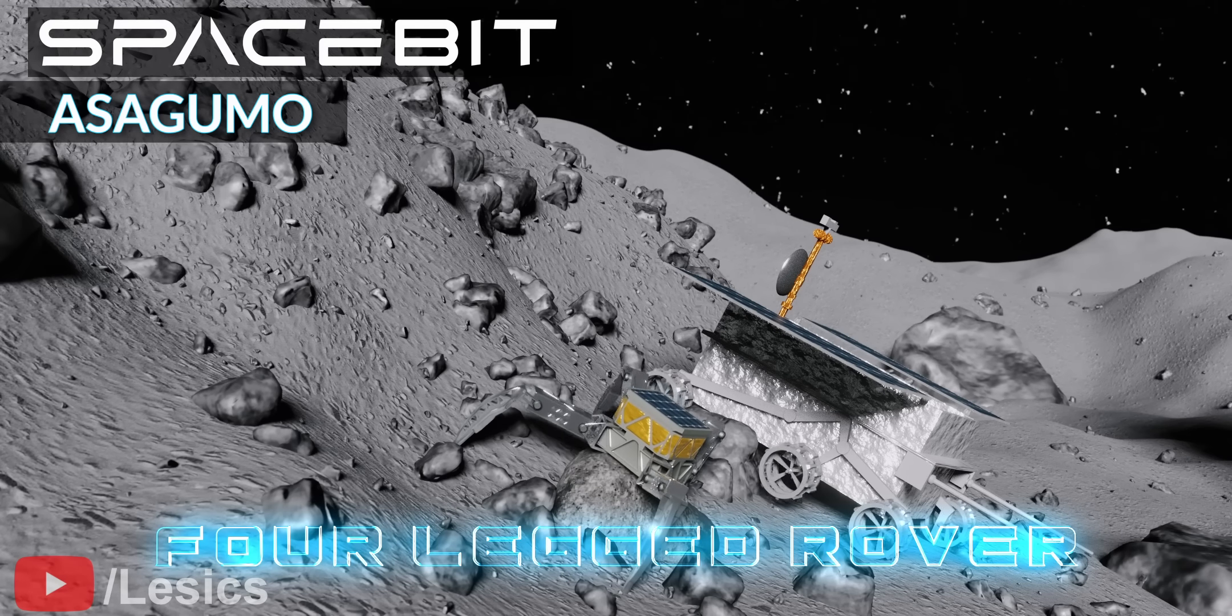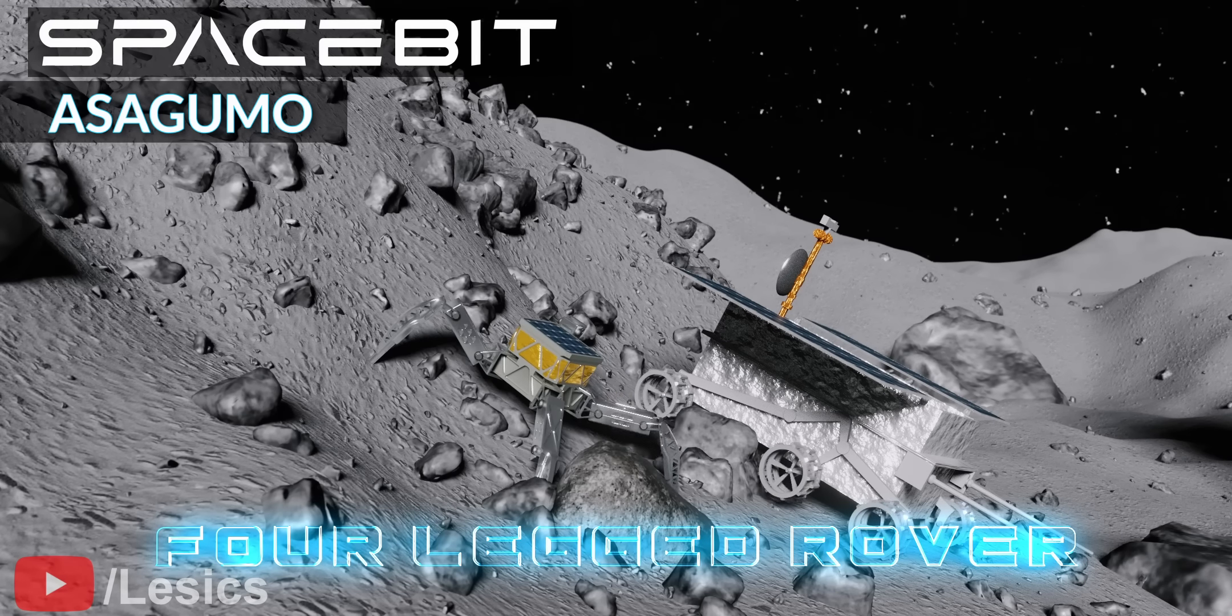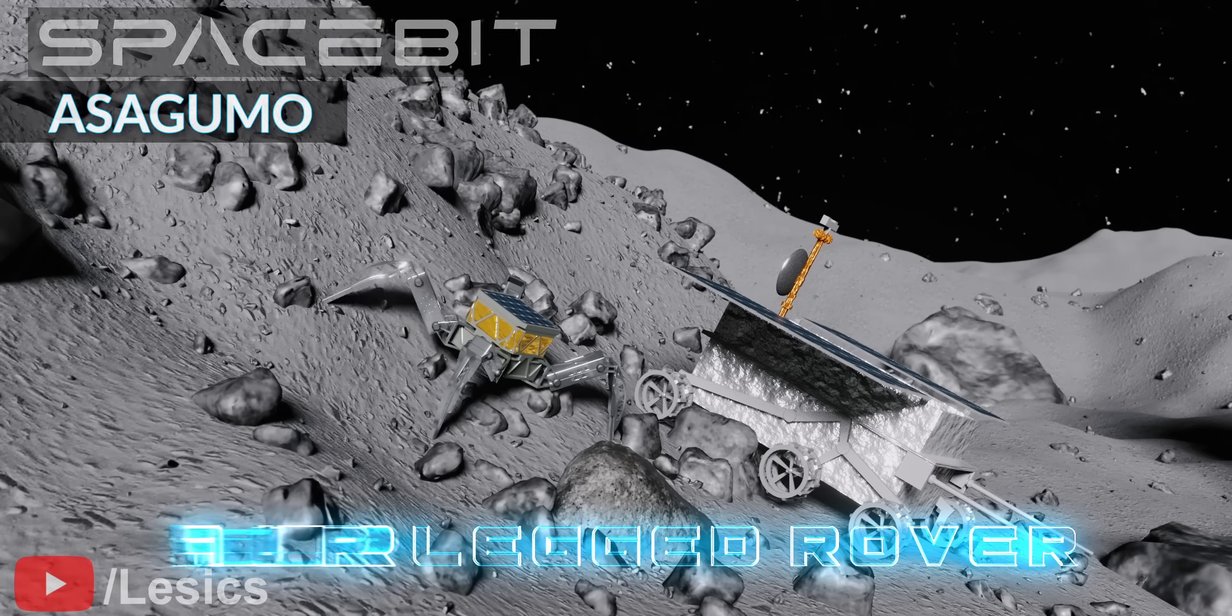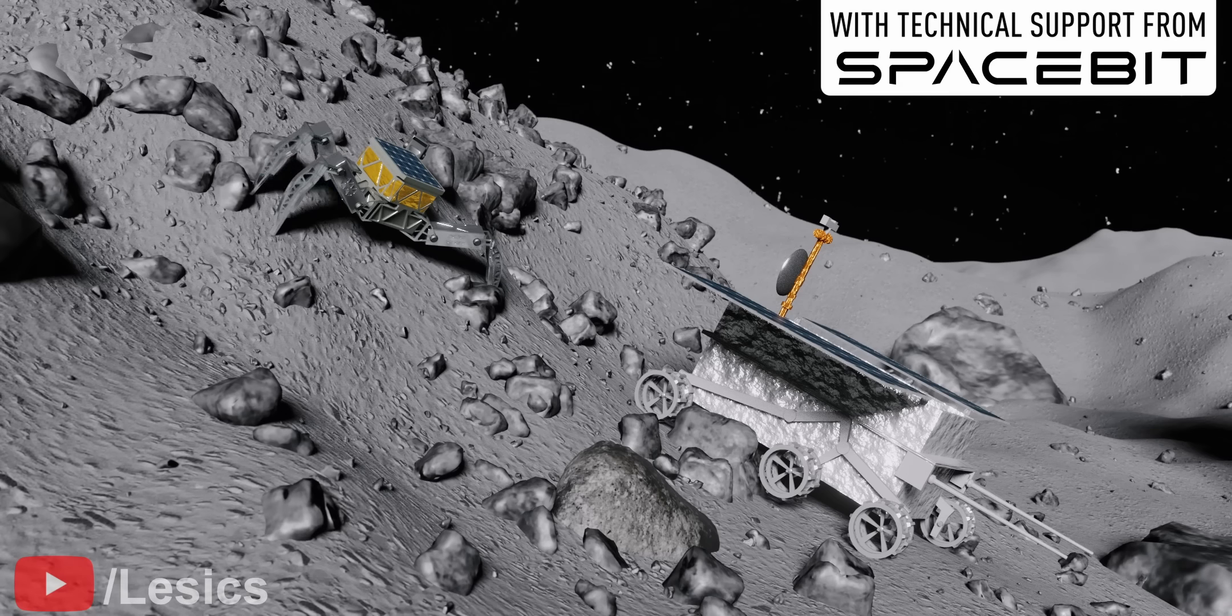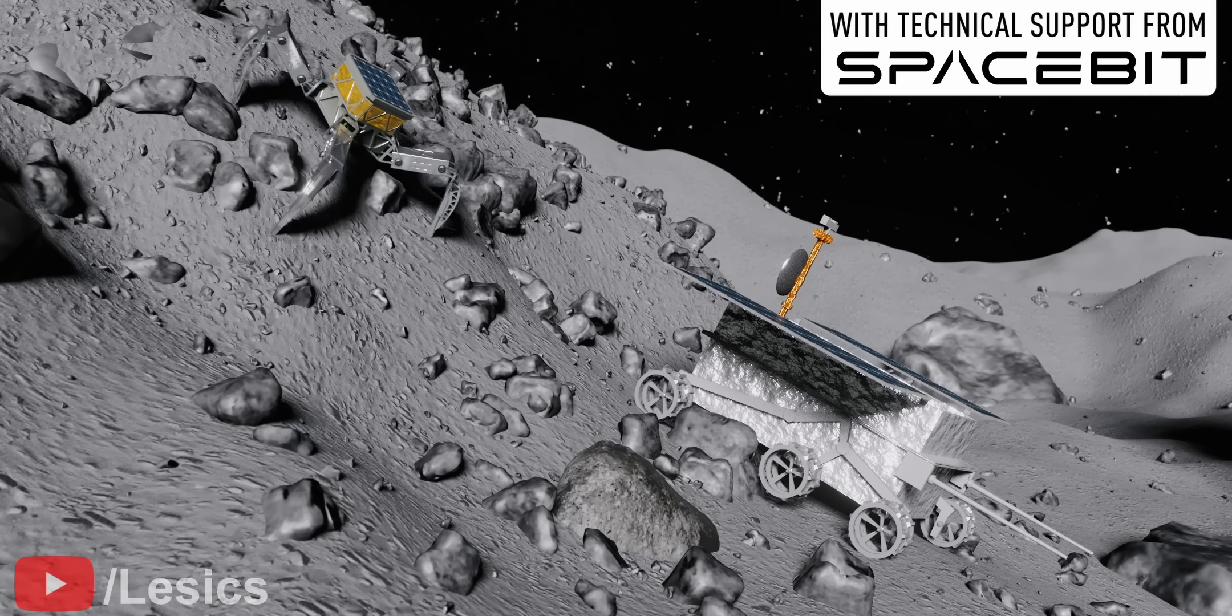These rovers can move individual legs to specific spots and can also tilt their bodies. Let's understand this latest space rover technology and we will also see how these rovers recover after a fall.